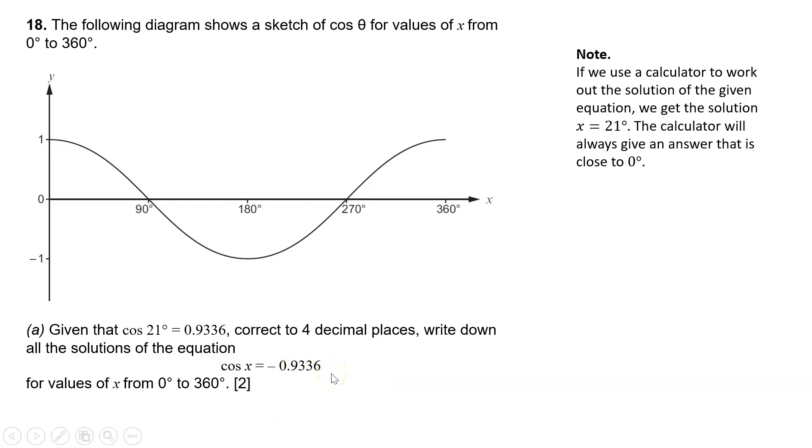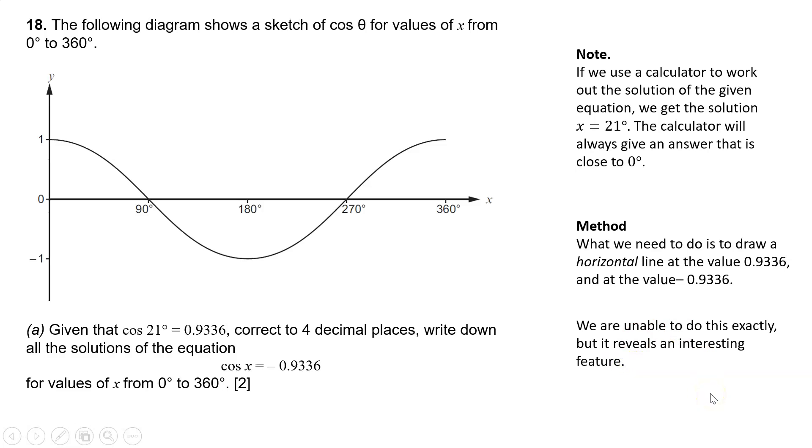So how are we going to find our answers for minus 0.9336? Well, we need to draw a horizontal line at the value 0.9336 and at the value minus 0.9336, because we are going to have to compare them. And as we are unable to do this exactly, it will reveal an interesting feature.